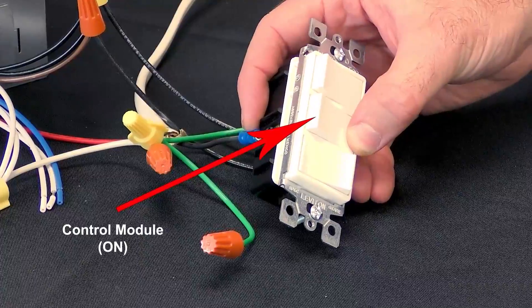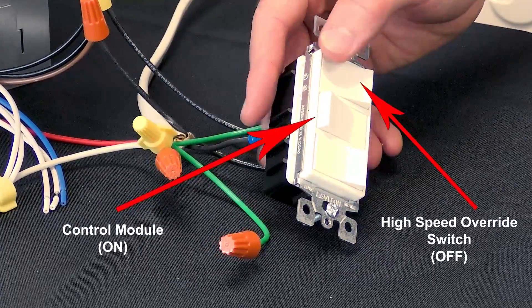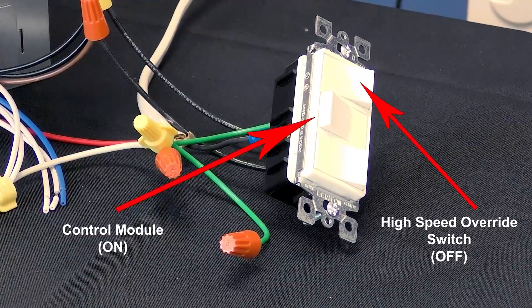When the control switch is on and the high speed override switch is off, the fan will run continuously at the low speed setting.